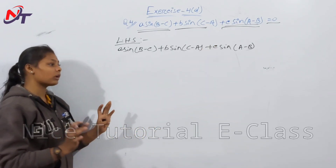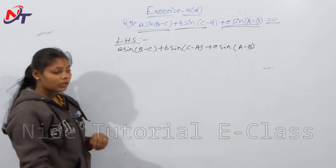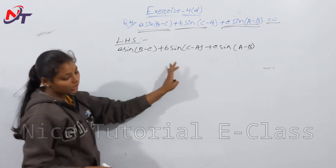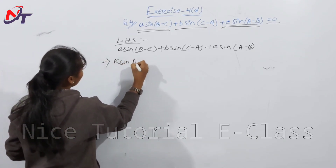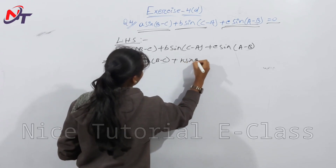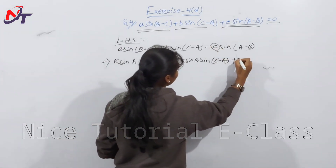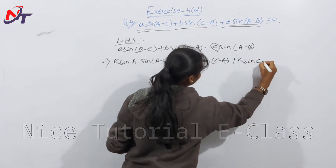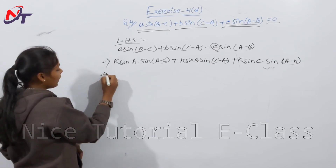We use the sine rule formula from properties of triangles. Small a = k sinA, small b = k sinB, small c = k sinC. Substituting: k sinA · sin(B − C) + k sinB · sin(C − A) + k sinC · sin(A − B).